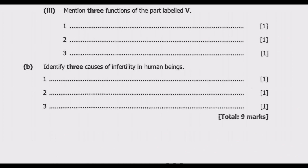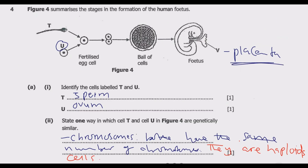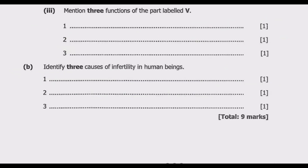Question 3: mention three functions of the part labeled V, which is the placenta. The placenta plays a crucial role in the development of the fetus. Among the key functions is nutrient supply — the placenta transports nutrients from the mother's blood to the fetus, including oxygen, glucose, amino acids, fats, vitamins, and minerals essential for fetal growth and development. Number two is waste removal — the placenta removes waste products from the fetus's blood, which are then eliminated by the mother's kidneys.